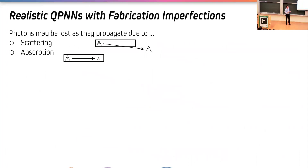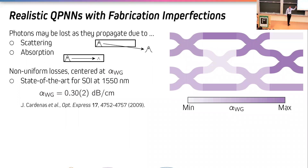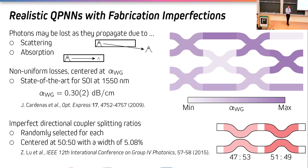With the architecture and training in mind, we can now incorporate relevant imperfections. Photons may be lost as they propagate due to scattering or absorption, and we treat losses as non-uniform: the losses are centered at some value alpha_wg but each Mach-Zehnder interferometer has a slightly different loss value. The state of the art for silicon-on-insulator at 1550 nm is 0.3 dB/cm. We also consider imperfect directional coupler splitting ratios — ideally all 50/50, but in reality you might have 47/53 for example, and those imbalances are also incorporated in the model.